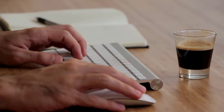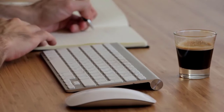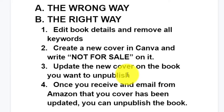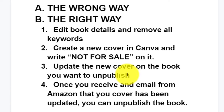Some people unpublish their books because their account has been terminated and they don't want their former books shown on Amazon or any other platform again. But if you don't unpublish properly, your book will show up on such platforms and Amazon may pick on your new account. So here's the right way: first, go into the book details and remove all the keywords. Then head over to Canva, create a new book cover that says 'Not For Sale,' and update the cover on Amazon. After a few days you'll receive an email confirming the update, and then your book is properly unpublished.